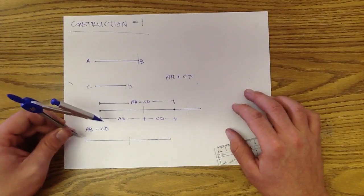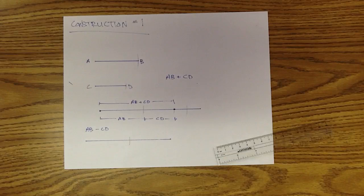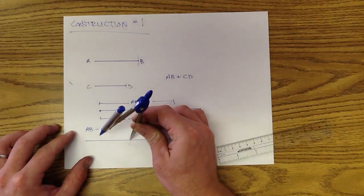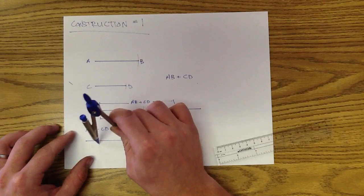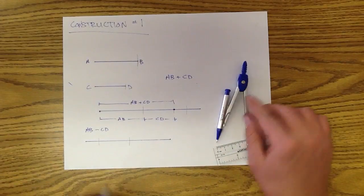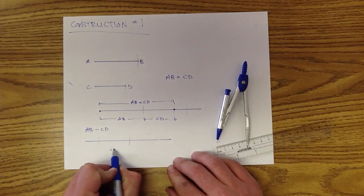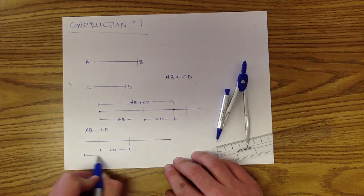If we want to subtract CD from AB, we know this whole part right here is AB. If I want to subtract it from it, let's start with the endpoint. This distance right here from point to here is going to be CD. So this here is CD. This whole thing is AB.